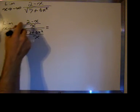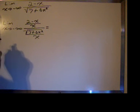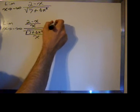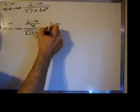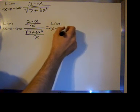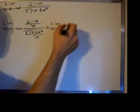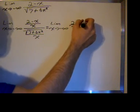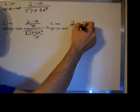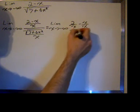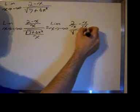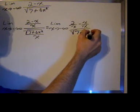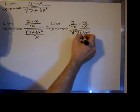I'll simplify the numerator first — I'm going to decompose it and simplify. So we have the limit as x approaches negative infinity of 2 over x minus x over x, divided by the square root of 7 plus 6x squared, divided by x.